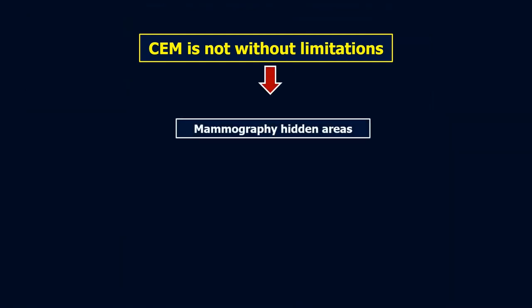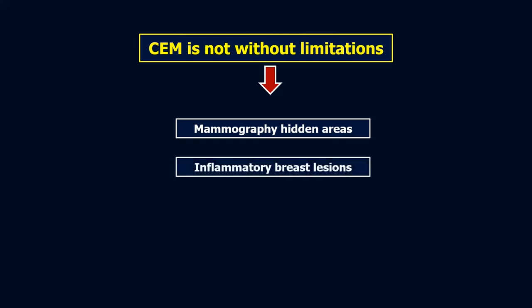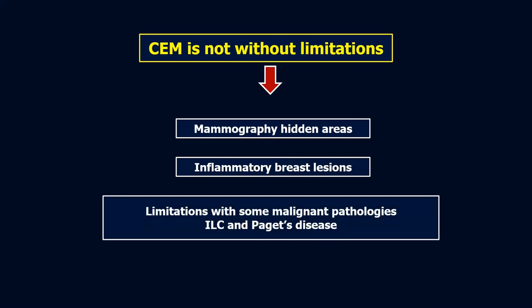We have said many advantages of contrast mammography, but there is no imaging modality without limitations. In lesion characterization, contrast mammography has limitations including lesions in mammography hidden areas — because contrast mammography is simply a mammogram with added contrast, so lesions missed on normal mammography can be missed on contrast mammography too. There are also limitations in inflammatory breast lesions, and with invasive lobular carcinoma and Paget's disease.